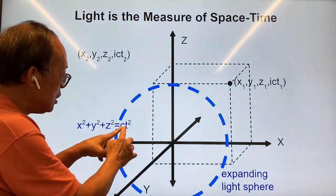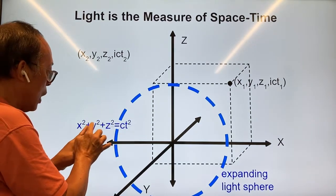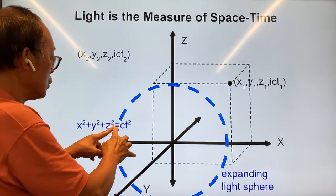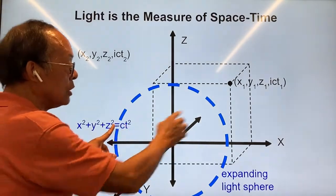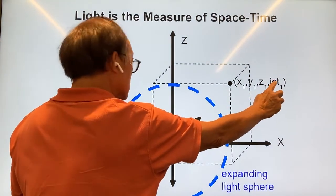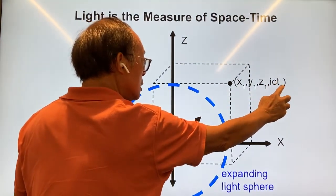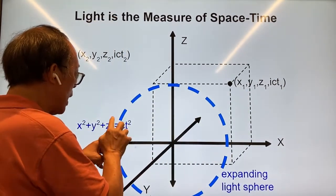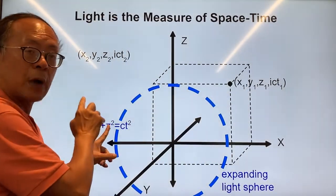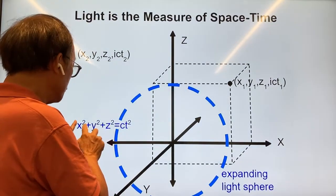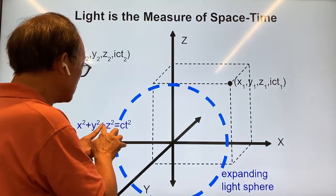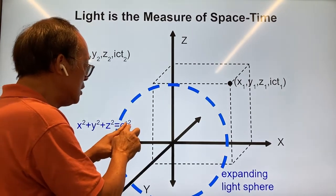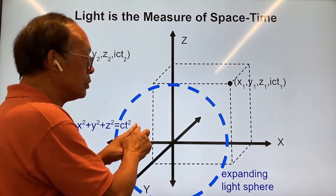If you take the c²t² term to the other side, so you have minus c²t², you will find that you can associate the imaginary number i·c·t, and then you have plus (i·c·t)², because the square of i is minus one. Therefore you have x² + y² + z² + (i·c·t)² = 0.